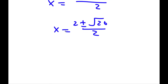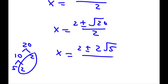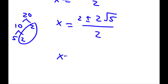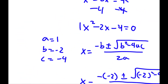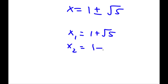Now we can simplify this radical. 20 is the same thing as 10 times 2, and 10 is the same thing as 5 times 2. So 2 here is going to be our outside number, and 5 is going to be what's inside. So we have 2 plus or minus 2 root 5, over 2. We can divide both terms by 2: 2 divided by 2 is 1, and 2 root 5 over 2 is simply the square root of 5. So my two solutions for x are x equals 1 plus the square root of 5, and x equals 1 minus the square root of 5.